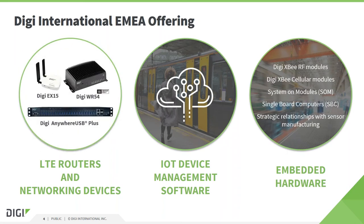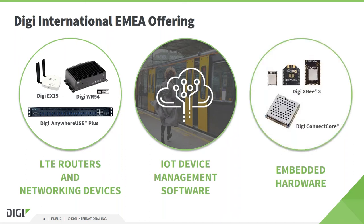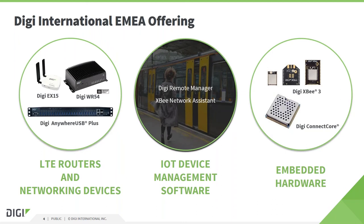Our OEM solution offerings include a wide range of embedded system-on-modules with Ethernet and wireless connectivity, and the world-renowned Digi XBee modules — a family of footprint-compatible wireless devices covering sub-gigahertz, 2.4 gigahertz, and cellular technologies. Overarching all of our hardware products is our software offering, including DRM, our remote management platform.